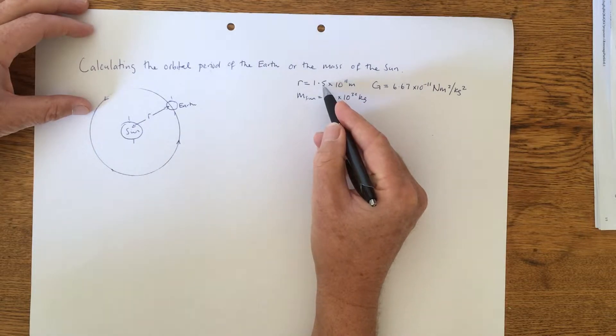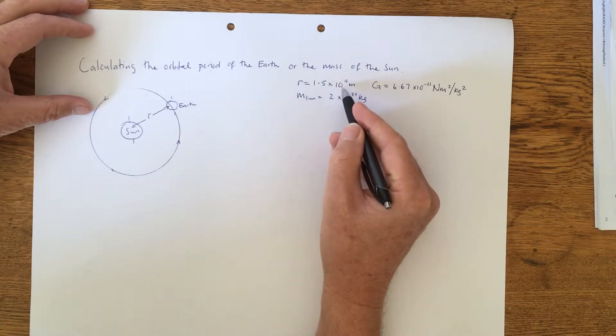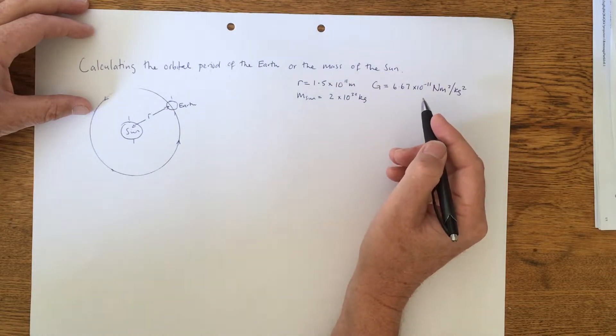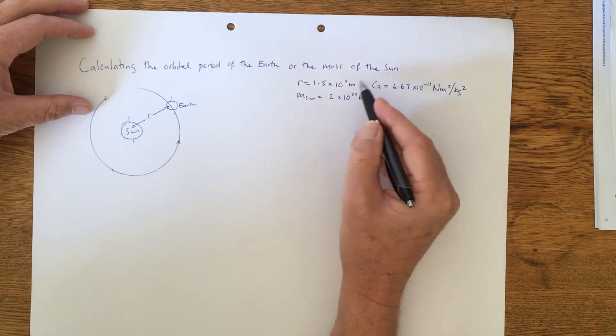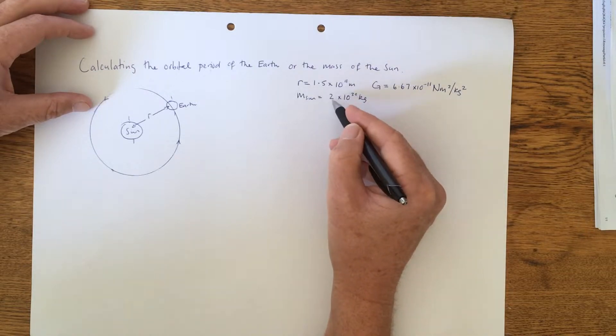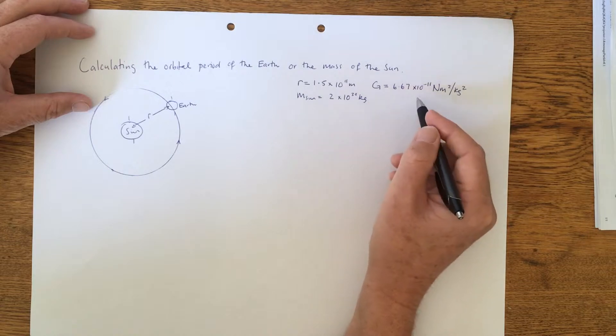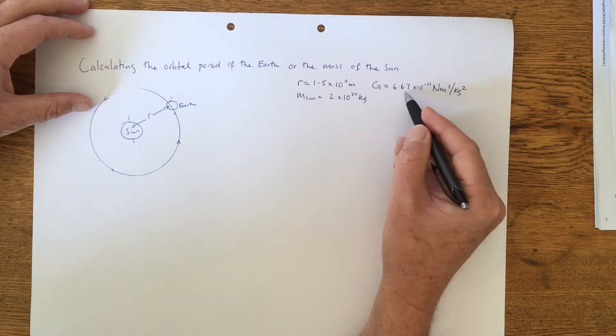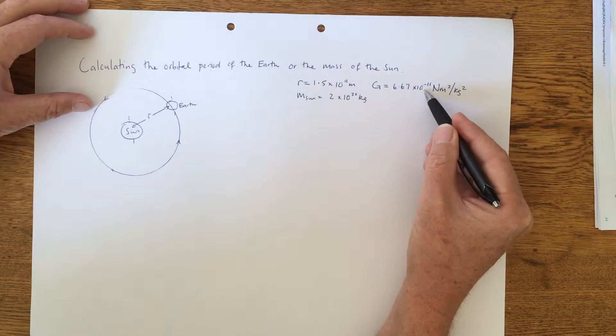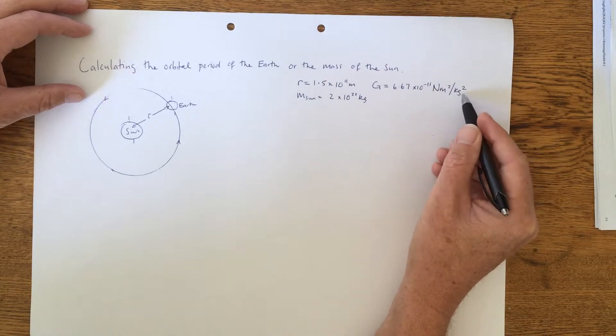And we know that it's around about 1.5 times 10 to the 11 metres. We also know the mass of the Sun is 2 times 10 to the 30 kilograms. And this universal gravitational constant is 6.67 times 10 to the negative 11 newton metres squared per kilogram squared.